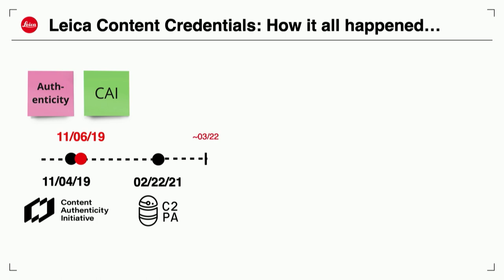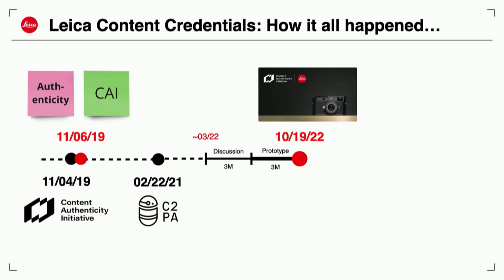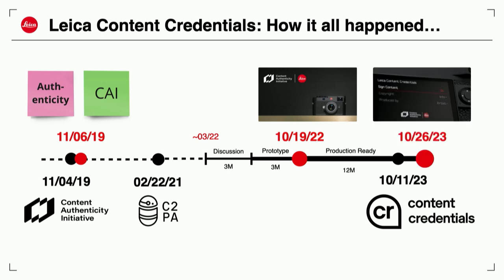About a year after the C2PA standard, Adobe approached us about bringing content credentials directly into a camera — that was the start of the discussion. The discussion lasted about three months, and then the CAI team challenged us: could we make it in half a year to announce the first prototype at the Adobe Max conference? We accepted the challenge. It took an additional three months, and our engineering team did amazing work so that at the Adobe Max conference in 2022 we announced the first M11 prototype with content credentials built in — back then a software-only solution where signing one JPEG took about 10 seconds. We knew that when we brought it to a production camera it had to be secure, perform well, and be actually usable. That took an additional year until we launched the M11P.